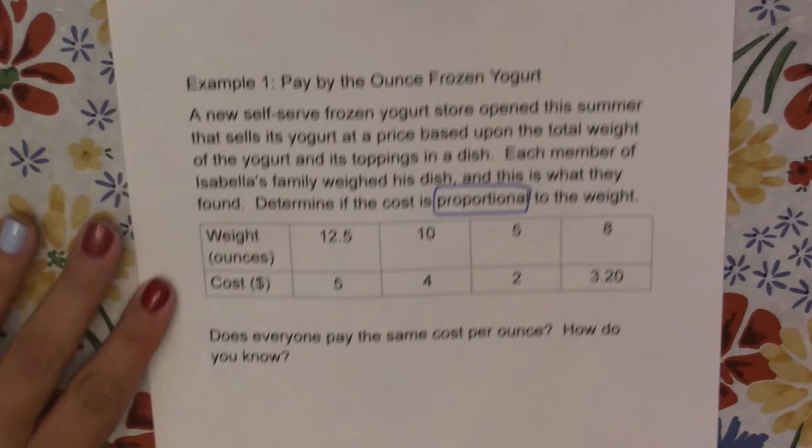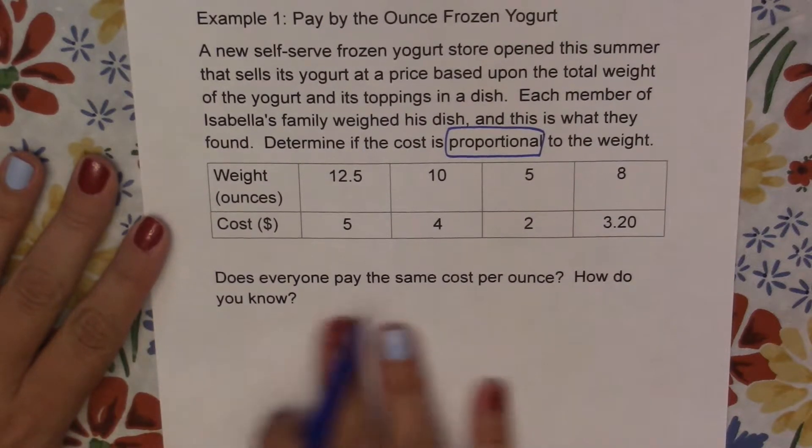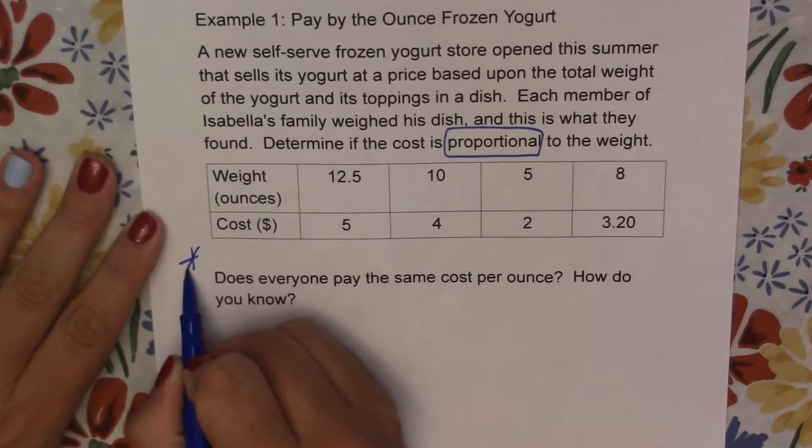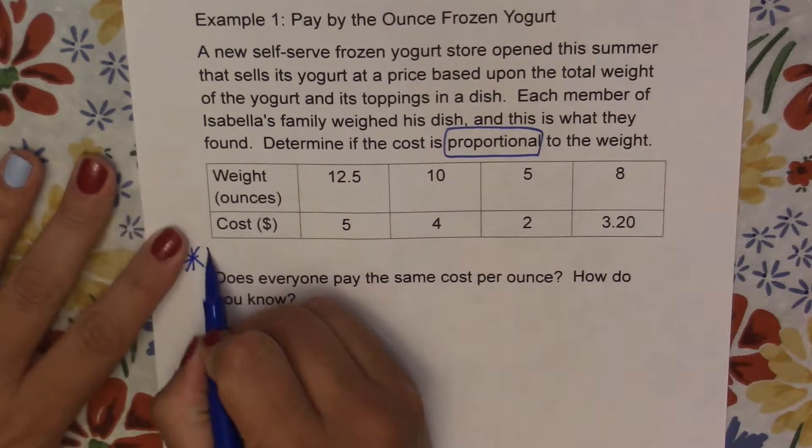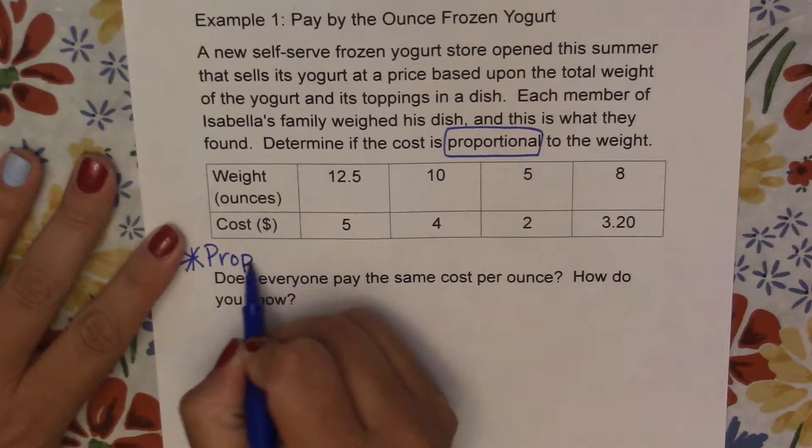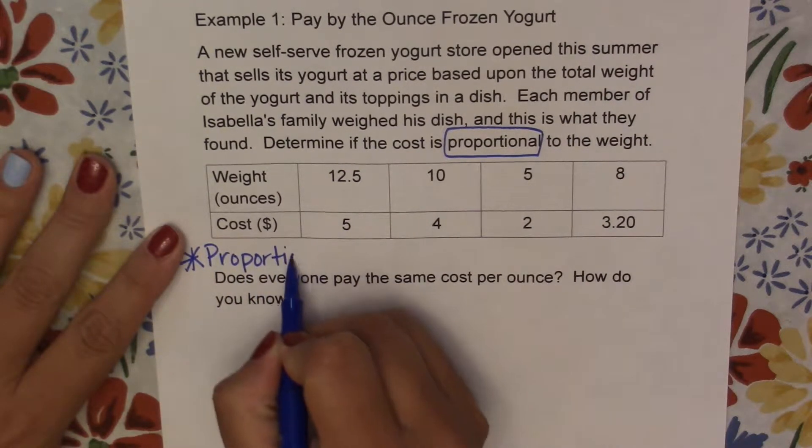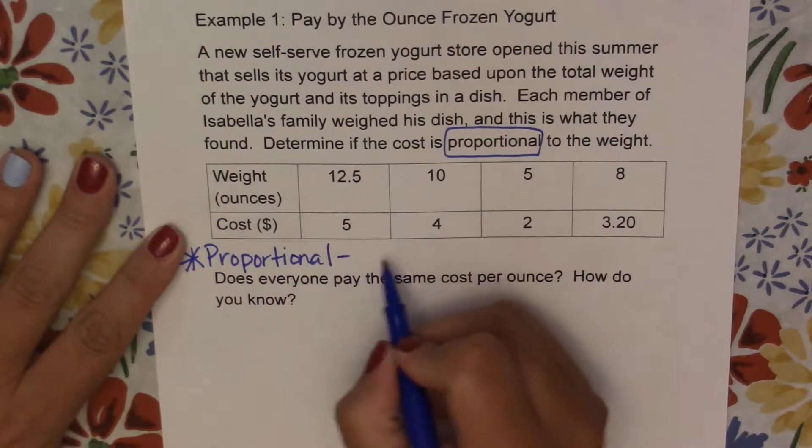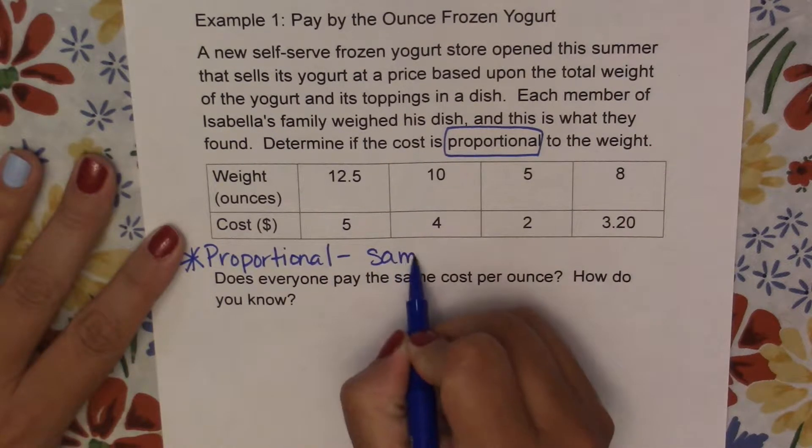So I'm going to write here a definition before we even answer our question. Proportional means having the same value.